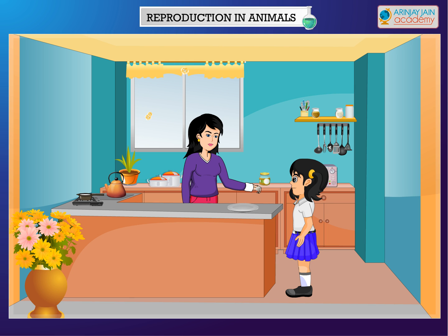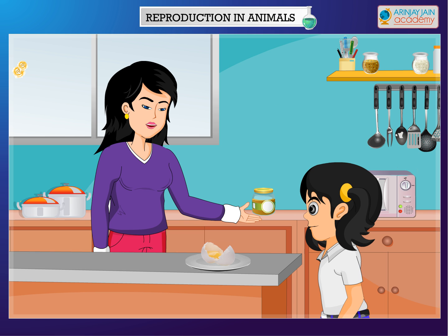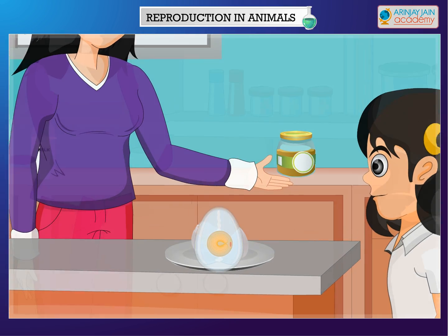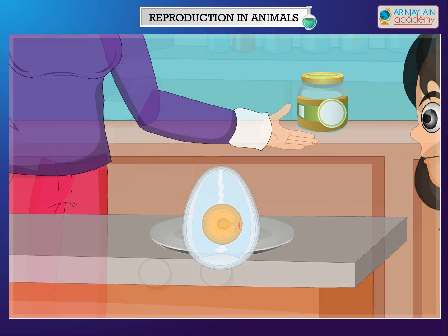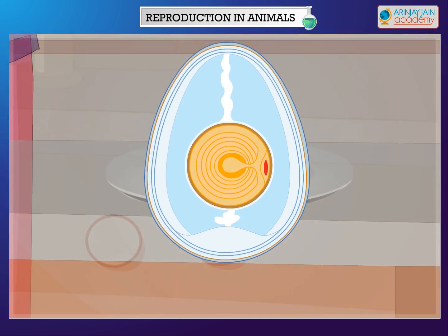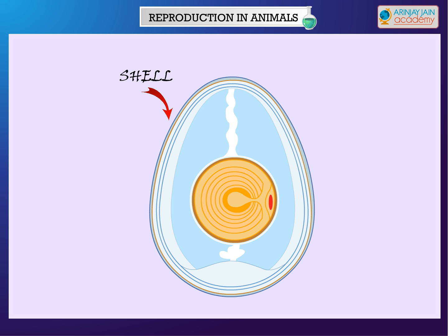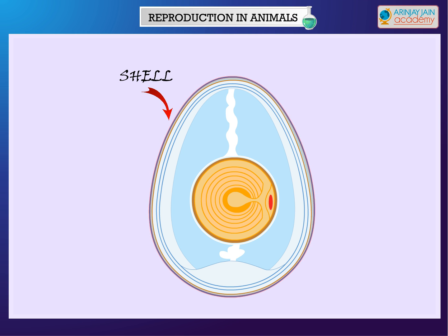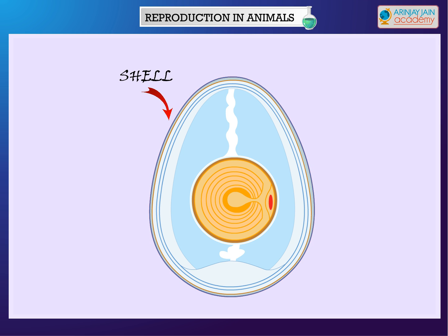Take this egg and break it carefully. I will show you the various parts of an egg. An egg has the following parts. Shell — it is the outer covering of an egg. It is usually thin and protects the growing baby.